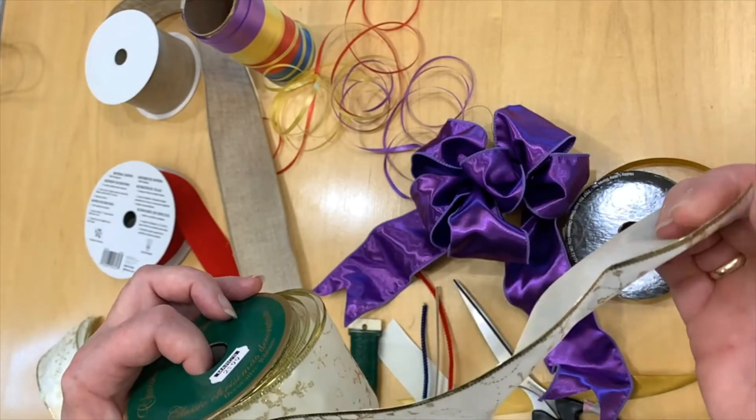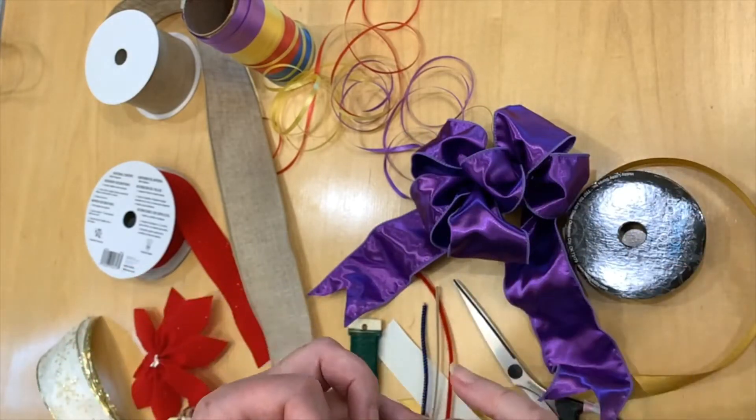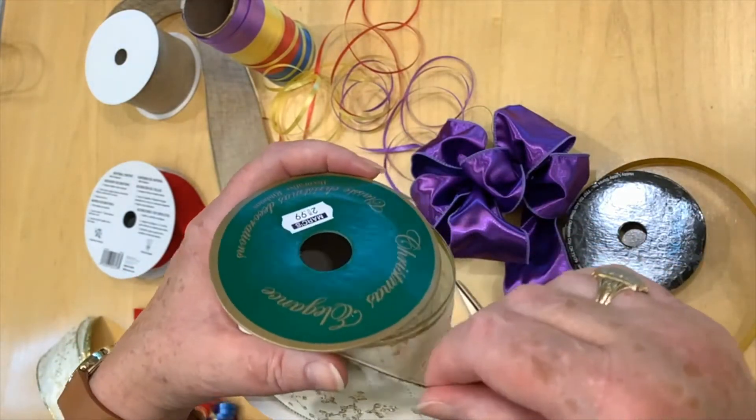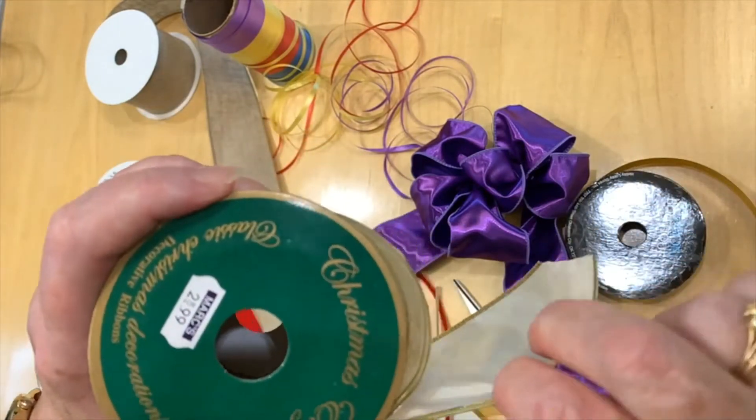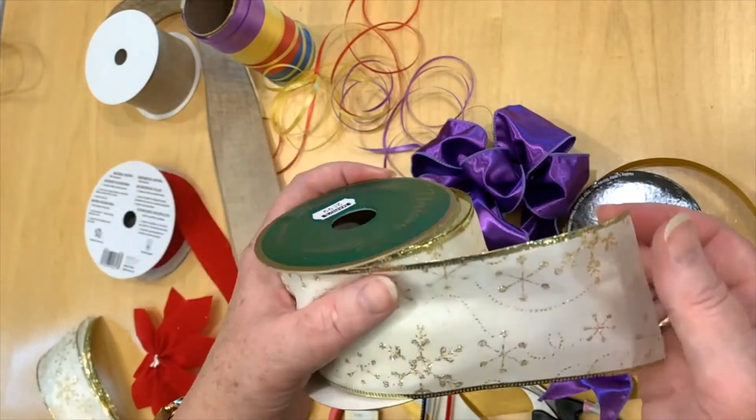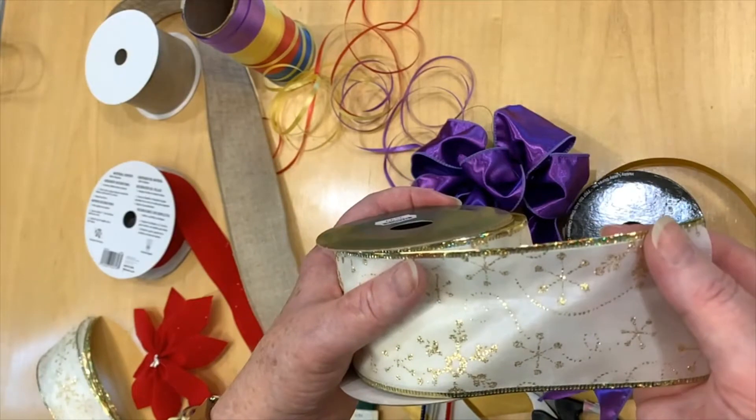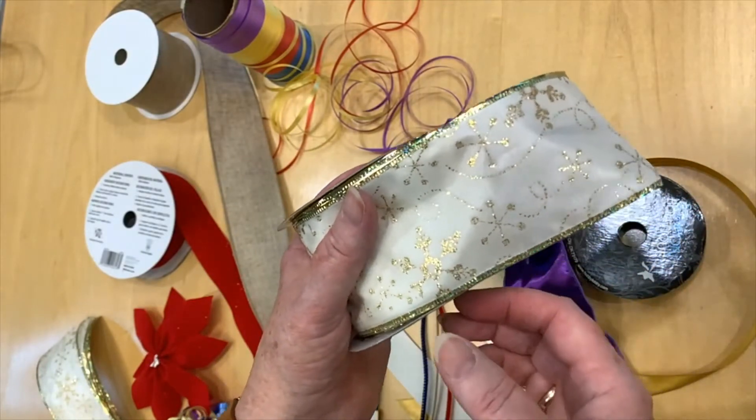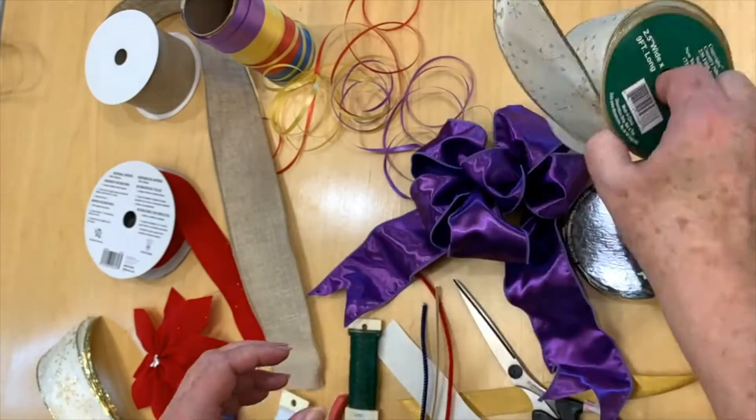You can see that there's a crimp right there that's now not going to go away so be selective in your ribbon choice and make sure that you have what you need. Wire ribbon is very helpful a lot of the time.